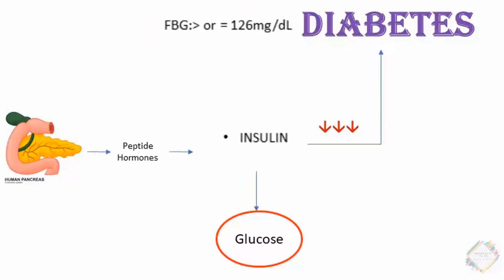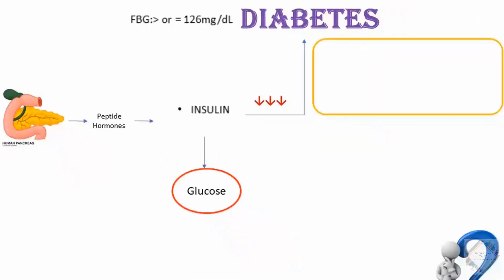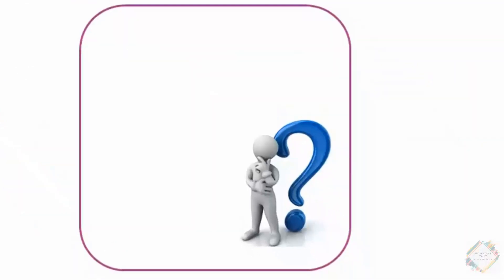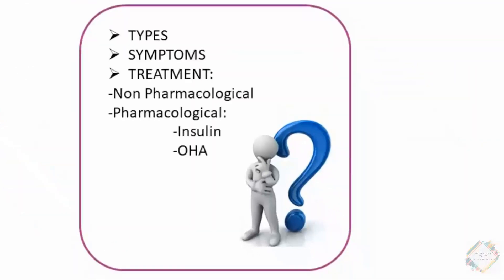The different types of diabetes include Type 1 Diabetes Mellitus, Type 2 Diabetes Mellitus, Gestational Diabetes Mellitus, and Diabetes Mellitus due to other causes such as genetic or other factors. Among these, the most common and important ones are Type 1, Type 2, and Gestational Diabetes Mellitus. In this and following sessions, we'll talk about the different types, their symptoms, and treatment.